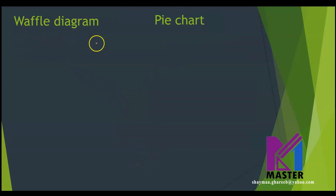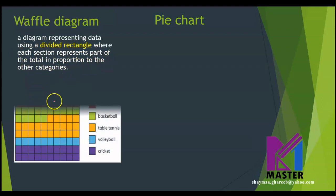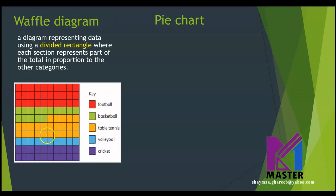Now, let's talk about waffle diagram and pie chart. The waffle diagram is a diagram representing data using a divided rectangle where each section represents part of the total in proportion to the other categories. Look at this waffle diagram here. Also, in the waffle diagram, we will see the key. The key shows us — it could be by different colors to represent each section, or it could be different types of shading to represent each section or each piece of information on this diagram.